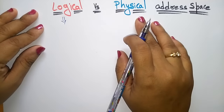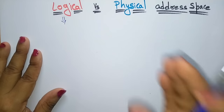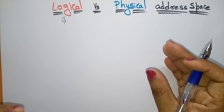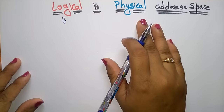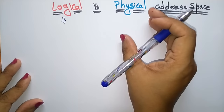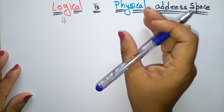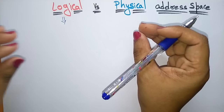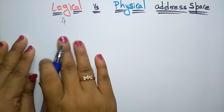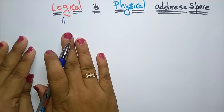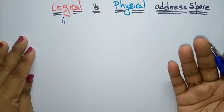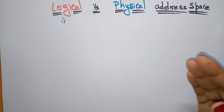Whereas physical address space is related to the memory unit — whatever the capacity of the memory unit your system has, that is the physical address space. The physical address space is an address generated by the memory unit, whereas logical address space is generated by the CPU. Logical is just an illusion, whereas physical is the actual memory unit.